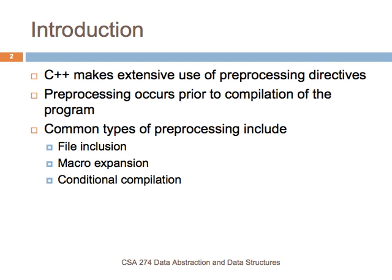When you do something like a pound include and give the name of a file, the preprocessor will find that file and place it into your program at whatever location you've provided. There are a number of conditions as to when those files will be included and when they won't, or when macros will be expanded and not expanded. The common types of preprocessing include file inclusion, macro expansion, and conditional compilation, and that's what we'll discuss here.